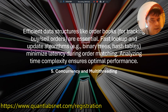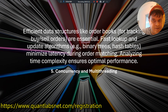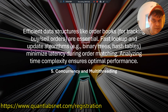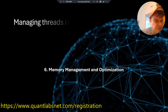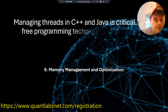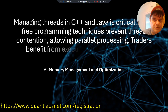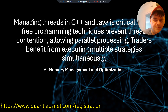Efficient data structures like order books for fast tracking of buy and sell orders are essential. Fast lookup and update algorithms like binary trees and hash tables minimize latency during order matching. Analyzing time complexity ensures optimal performance. Managing threads in C++ and Java is critical. Lock-free programming techniques prevent thread contention and allow parallel processing. Traders benefit from executing multiple strategies simultaneously.